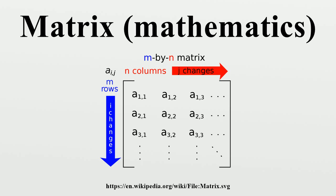The determinant, det(A) or |A|, of a square matrix A is a number encoding certain properties of the matrix. A matrix is invertible if and only if its determinant is non-zero. Its absolute value equals the area or volume of the image of the unit square, while its sign corresponds to the orientation of the corresponding linear map. The determinant is positive if and only if the orientation is preserved. The determinant of 2 by 2 matrices has a well-known formula; the determinant of 3 by 3 matrices involves six terms. The more lengthy Leibniz formula generalizes these formulae to all dimensions. The determinant of a product of square matrices equals the product of their determinants: det(AB) equals det(A) det(B). Adding a multiple of any row to another row or a multiple of any column to another column does not change the determinant. Interchanging two rows or two columns affects the determinant by multiplying it by minus one.